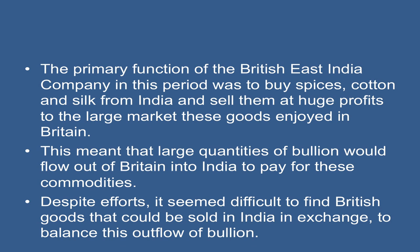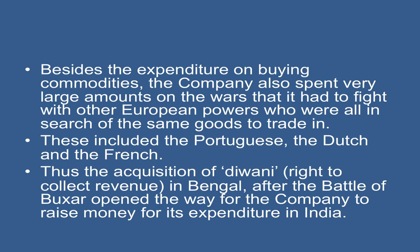This meant that large quantities of bullion would flow out of Britain into India to pay for these commodities. Despite efforts, it seemed difficult to find British goods that could be sold in India in exchange, to balance the outflow of Indian goods. Besides the expenditure on buying commodities, the company also spent very large amounts on the wars it had to fight with other European powers who were all in search of the same goods to trade in — these included the Portuguese, the Dutch, and the French. Thus, the acquisition of Diwani rights — the right to collect revenue in Bengal — after the Battle of Buxar opened the way for the company to raise money for its expenditure in India.